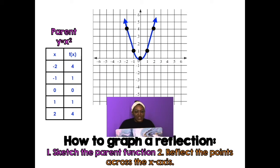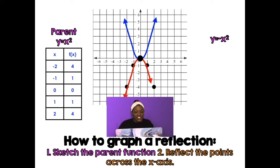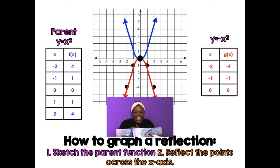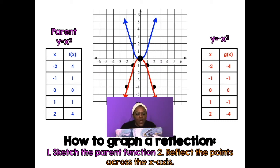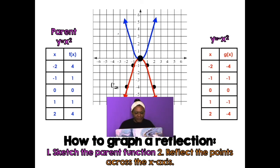To graph a reflection: number one, sketch the parent function. Number two, reflect the points across the x-axis. The parent function y equals x squared has five points: (-2, 4), (-1, 1), (0, 0), (1, 1), and (2, 4). Each point gets reflected — if it's four spaces above the x-axis, the reflection is four spaces below. What I notice is that all x values stay the same, but the y values change from positive to negative.